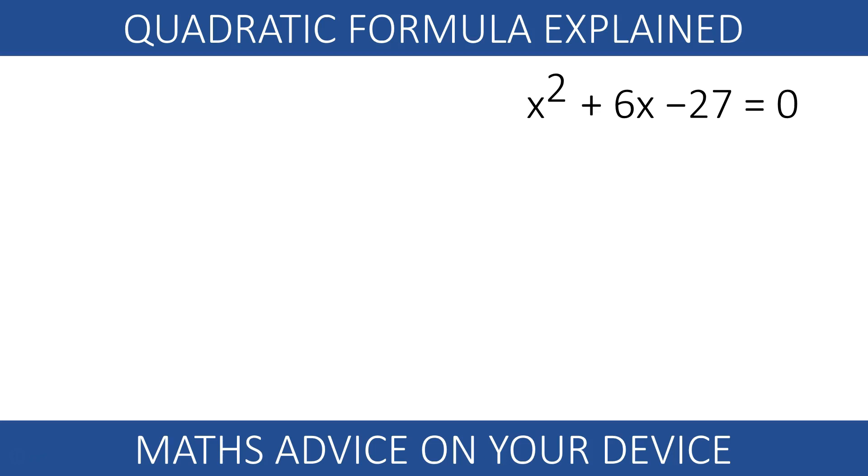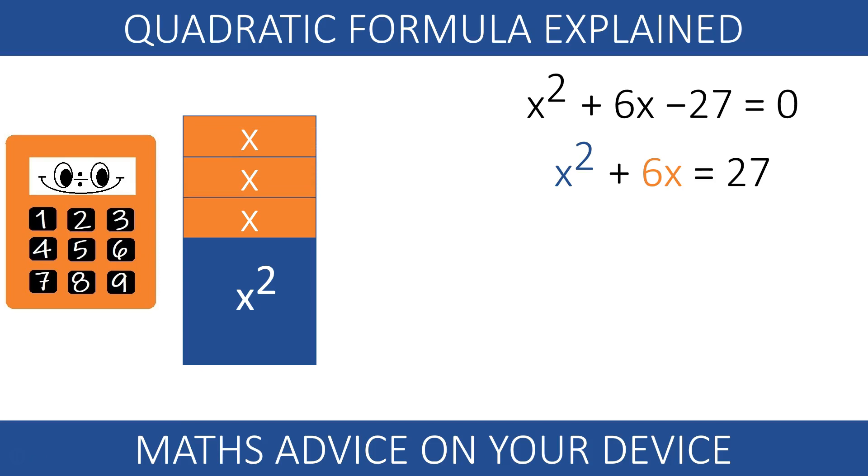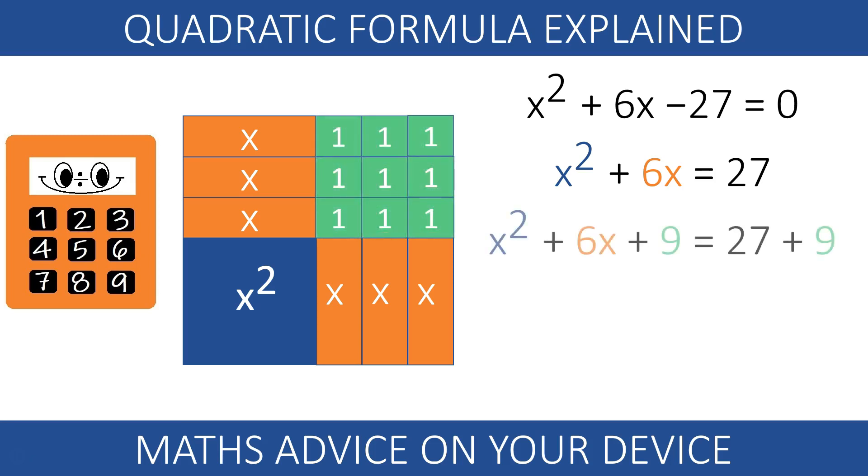We are solving x squared plus 6x minus 27 equals 0. We park the number to the other side of the equation. We draw a square side x and we draw 6 rectangles with length x and height 1. To make it into a perfect square, we need 9 squares one by 1.